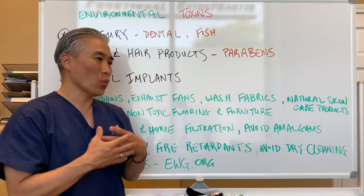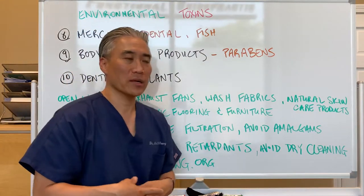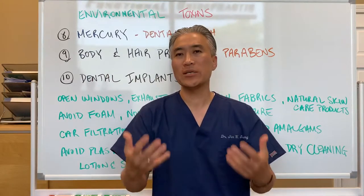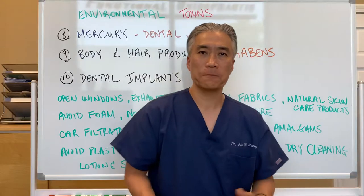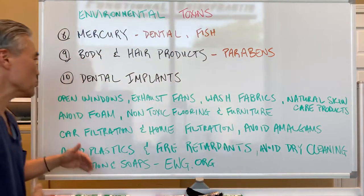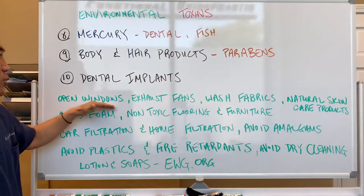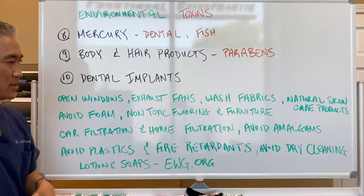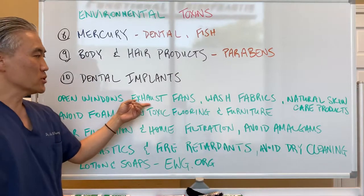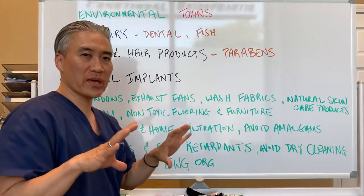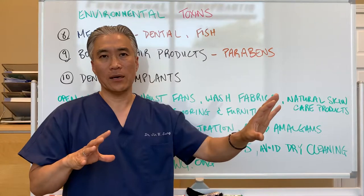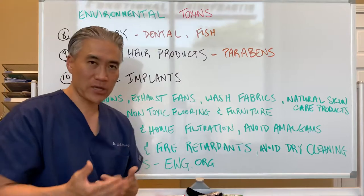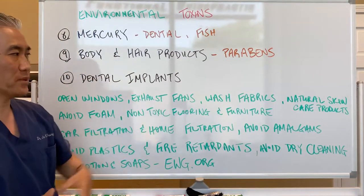So what do we need to do? We are bathing in environmental toxins. What do we do to help ourselves? The first thing we can do is, in the home, open your windows and air out your house for at least 15 to 20 minutes every day. You can use exhaust fans — put a window fan in, one for outtake and one for intake, and you can exchange the air in your house frequently.